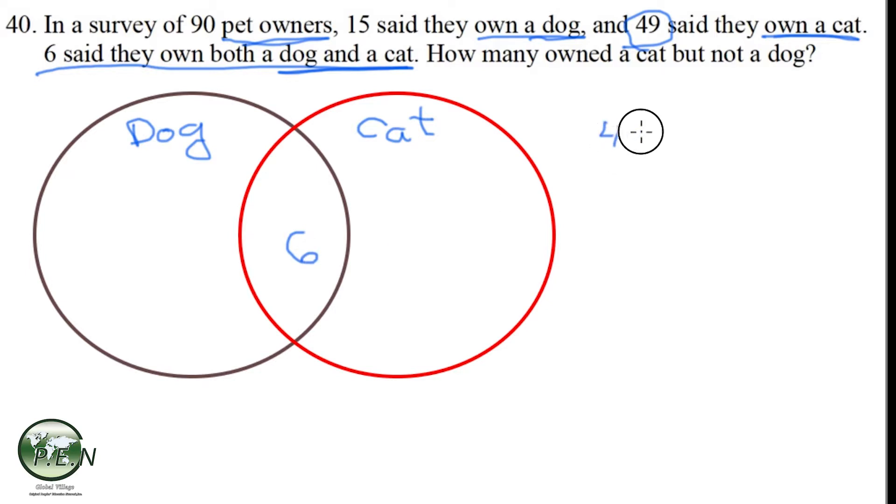So what we have is 49 minus the six. And that's going to leave us with 43 cat owners over here. And these would be the pet owners who only own a cat.